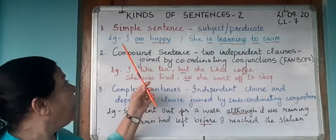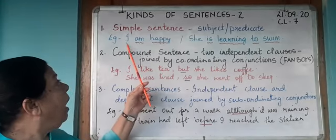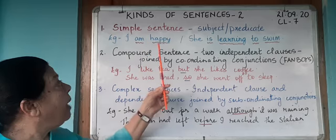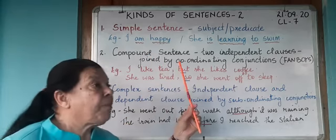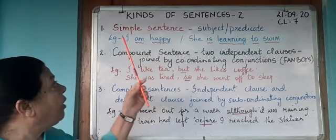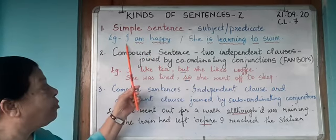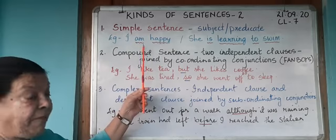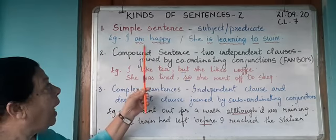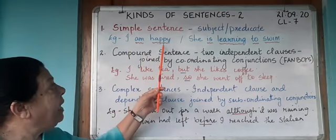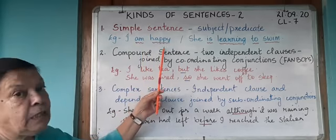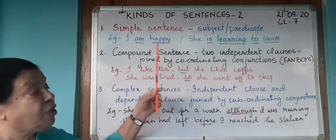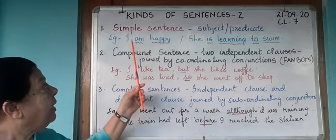For example: I am happy. 'I' here is your subject. 'Am' is the verb. 'Am happy' is the predicate. So this is a simple sentence.